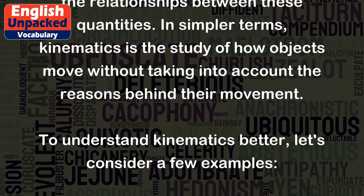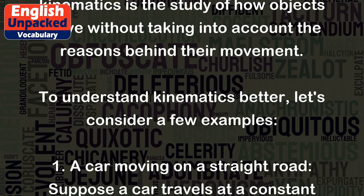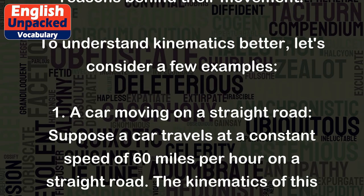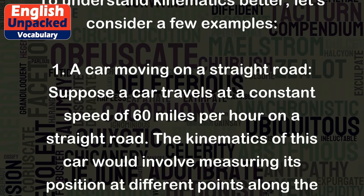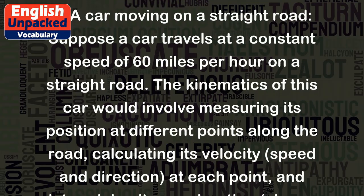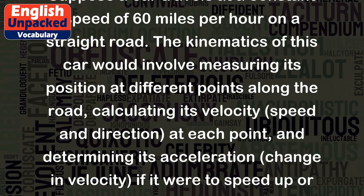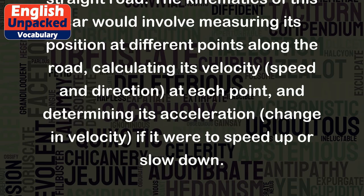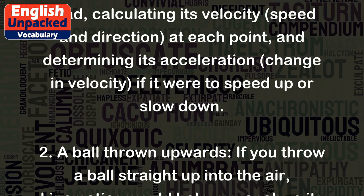To understand kinematics better, let's consider a few examples. First, a car moving on a straight road: suppose a car travels at a constant speed of 60 miles per hour on a straight road. The kinematics of this car would involve measuring its position at different points along the road, calculating its velocity, speed and direction, at each point, and determining its acceleration — change in velocity — if it were to speed up or slow down.